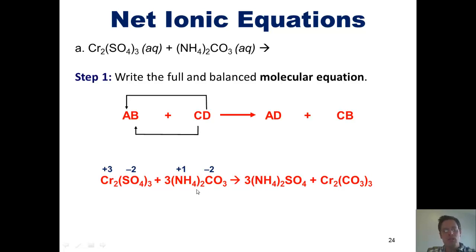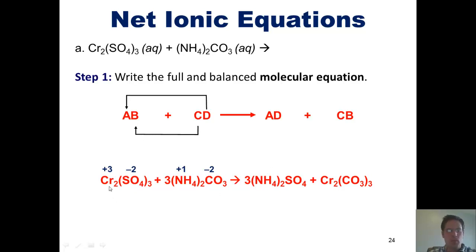When we do the partner swap, ammonium — cation C — gets together with sulfate — anion B — forming ammonium sulfate. Separately, chromium — cation A — gets together with carbonate — anion D — and we write chromium carbonate.